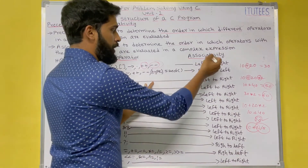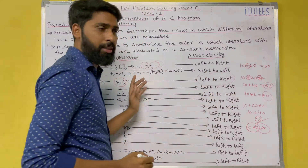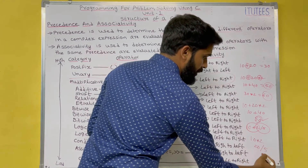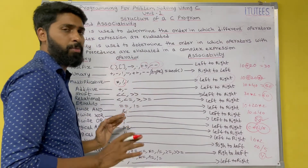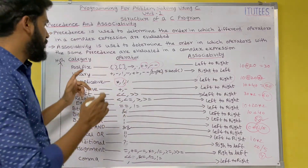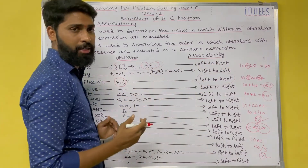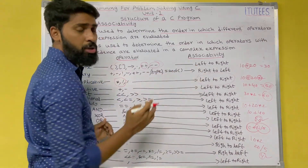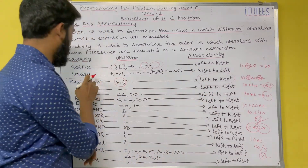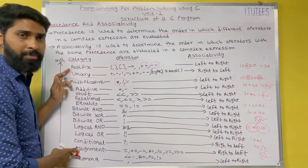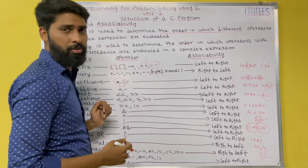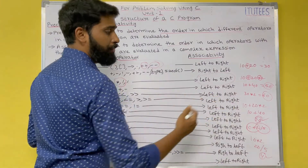Since multiplication and division have the same precedence, you follow the associativity rule: left to right. That means first you perform 10 into 2, which gives 20, then 20 by 5 equals 4. So 4 is the answer. For postfix expressions, associativity is left to right. For unary operators, it is right to left. Most operators follow left to right, except unary, conditional, and assignment operators, which follow right to left. For remaining operators, you follow left to right.